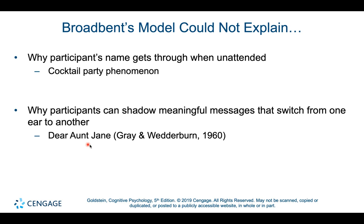Another experiment illustrating problems with Broadbent's model is called the Dear Aunt Jane experiment, which also involves dichotic listening. Researchers intentionally manipulated the attended message to bounce back and forth between the left and right ear. Even though participants were told to attend only to their right ear, they were capable of following the message as it bounced from ear to ear. This suggests that more processing is occurring on the unattended message than was initially thought.